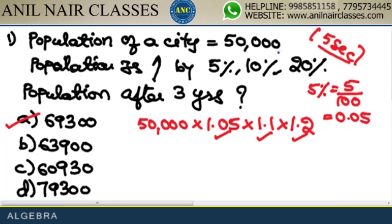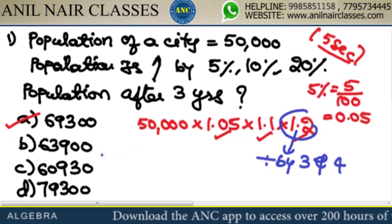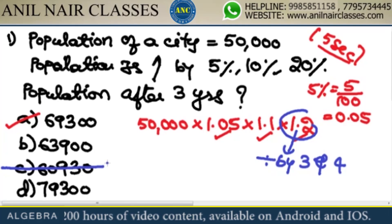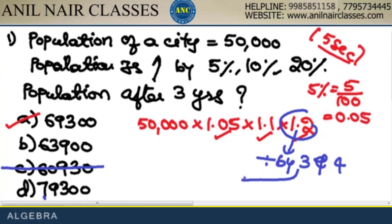Please do not calculate by multiplying and waste your time. 1.2 is divisible by 3 and 4, so the answer should be divisible by 3 and 4. The divisibility rule of 4: the last two digits should be divisible by 4. 30 is not divisible by 4, so that option is eliminated. For 793,000: 7 plus 9 is 16, 16 plus 3 is 19. The sum of digits must be divisible by 3, but 19 is not divisible by 3, so this is eliminated.